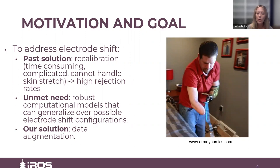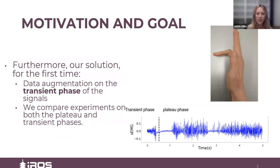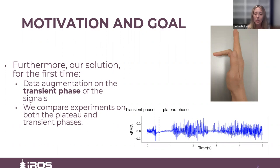We use data augmentation as a way to achieve this generalization. Furthermore, in this paper, for the first time, we robustify the transient phase of the signal to electrode shift. Shown on the top is one of the many hand gestures we classify. There is some transient phase of time that it takes for a person to move their hand from rest into this gesture. Then the person is asked to hold the gesture in a static position for a few seconds — this hold is known as the plateau phase of the data. The figure on the bottom is a time series electrode signal. The dashed line is the cutoff between the transient and the plateau phases of the data. Most research focuses on the plateau phase because it is much simpler to analyze. We perform experiments on both the transient and plateau phases.